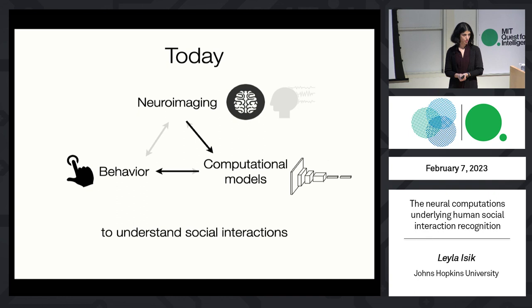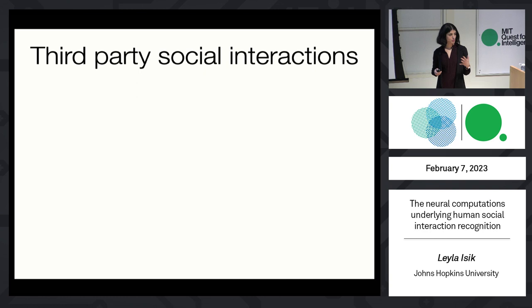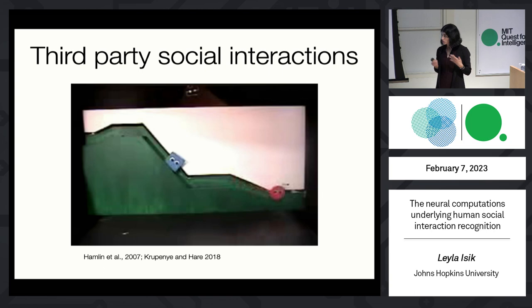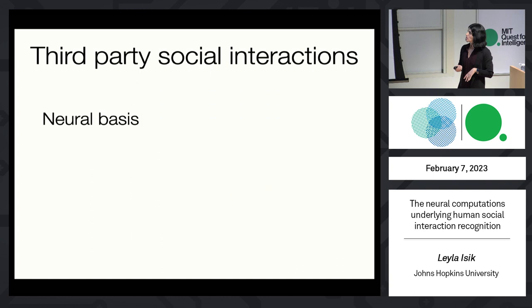The focus of today's talk is on understanding and recognizing other people's social interactions — specifically third-party social interaction, such as how you recognize the interaction between Obama and his staffer, not your own interactions with somebody else. This is a hugely important ability for humans. After only a few months of age, infants can tell if one puppet is helping or hindering another. Primates can also make similar distinctions. But until recently, very little was known about the neural basis or neural computations.